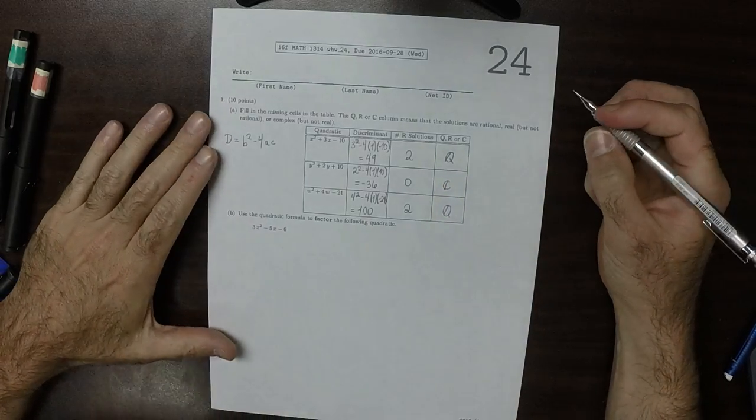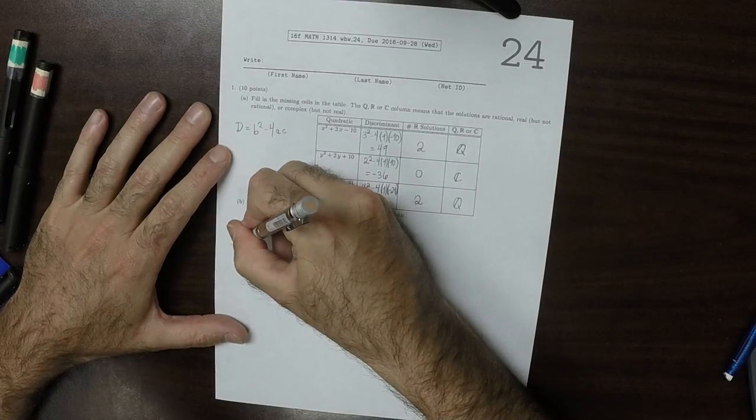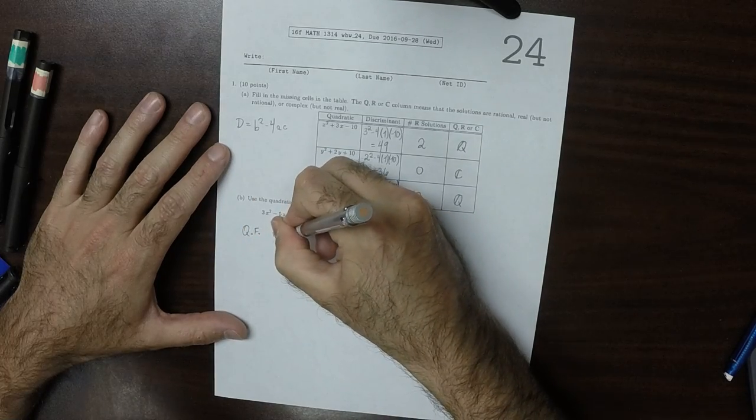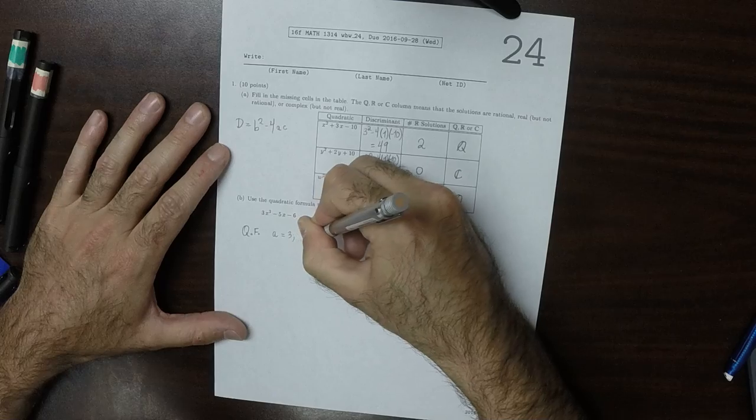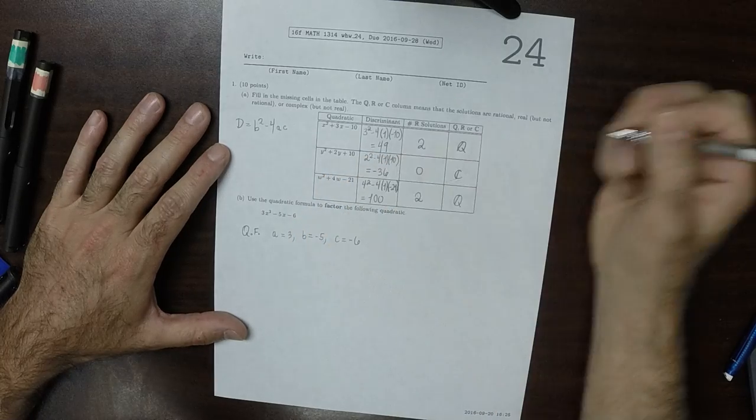So now use the quadratic formula to factor the following quadratic. We'll use the quadratic formula with a is 3, b is negative 5, and c is negative 6.